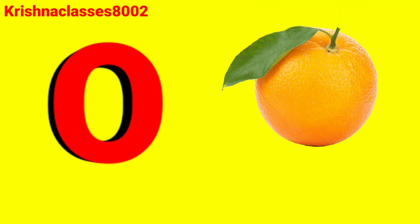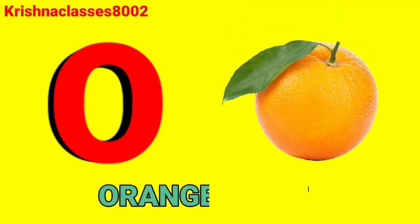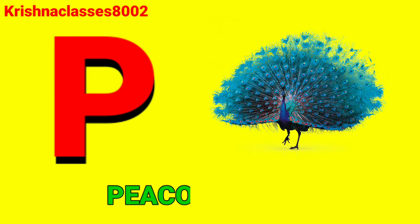O for orange. Orange means santra. O for island. Island means hempcrap. P for peacock. Peacock means moor.